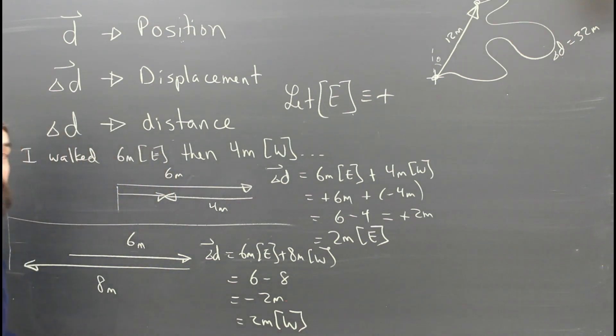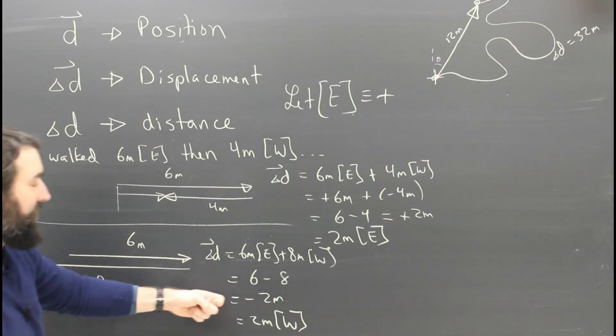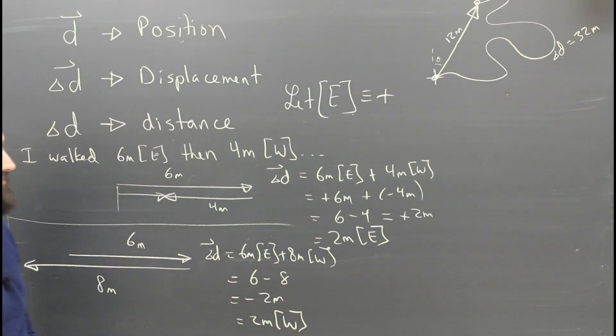Because positive is east, negative is west. But don't say negative two meters east. Don't say negative two meters west, because that means east. Let's separate our pluses and minuses from our directions.